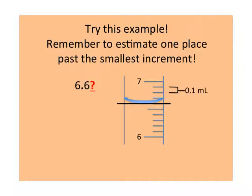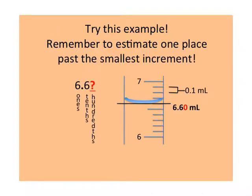So we know and can see that this graduated cylinder goes up by a tenth of a milliliter as its smallest increment. And I can tell that the bottom of my meniscus is reading just about exactly on the six point six milliliter line. But I still need to estimate one decimal place past, to the hundredths place. Therefore, since the bottom of the meniscus is exactly on the six point six line, I would estimate a zero in the hundredths place — so 6.60 milliliters.